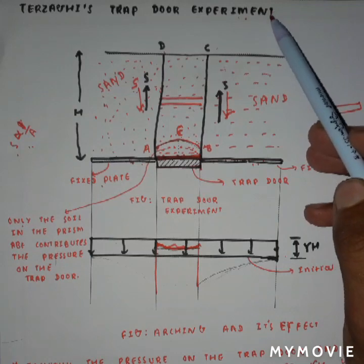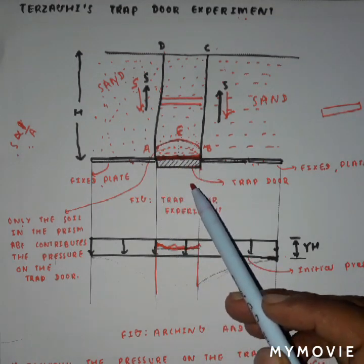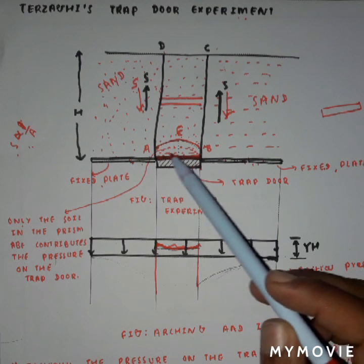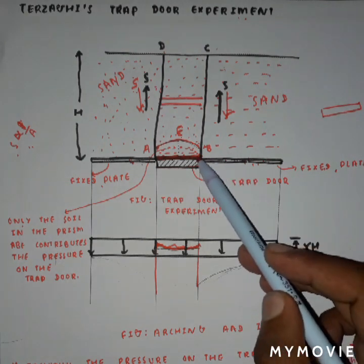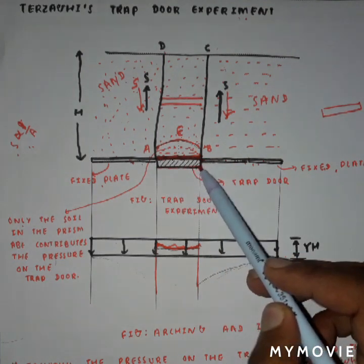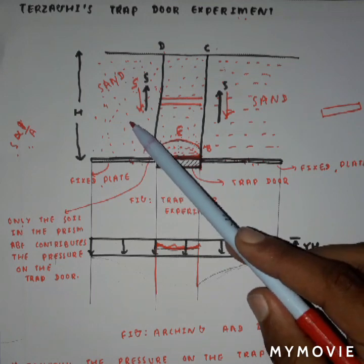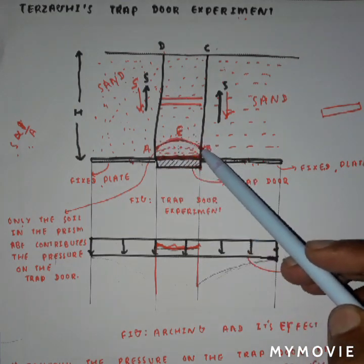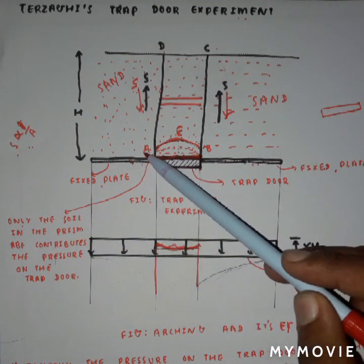Now let us see the arrangement of the trapdoor experiment. It consists of fixed plates on two sides, and between them a trapdoor. Sand is filled up to height H. Initially, when there was no movement of the trapdoor, the vertical stress acting on both the trapdoor and the fixed plate was the same, equal to γH. The trapdoor is fitted with a weighing scale. When the trapdoor is allowed to move slightly downward, the pressure on the trapdoor considerably decreases, and the pressure on the adjacent sand increases. This is because the soil below arc AEB falls down through the trapdoor, and the pressure on the trapdoor is only due to the soil prism AEB.